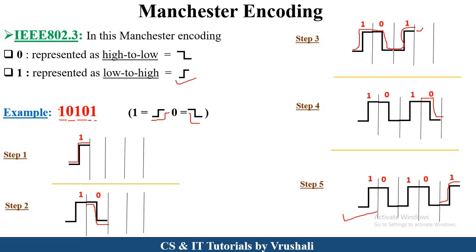Let's revise once. In IEEE: 1 is low to high, 0 is high to low. You just merge the symbols according to the bits in the example. For 0 this symbol is high to low, and 1 is represented low to high. Just merge the symbols according to the example. So this is called Manchester encoding.